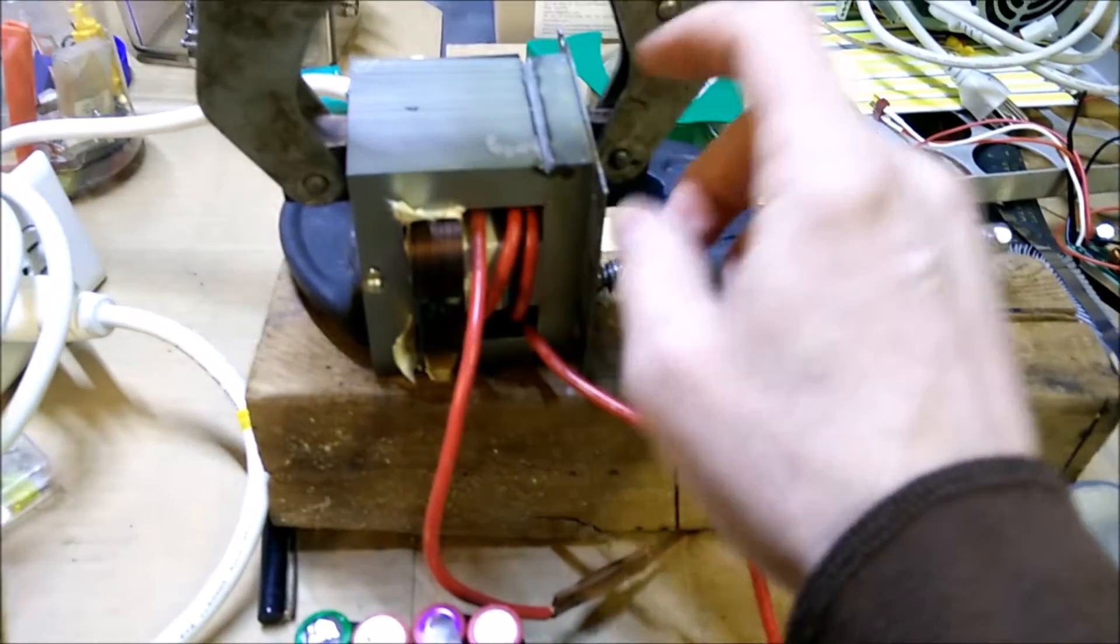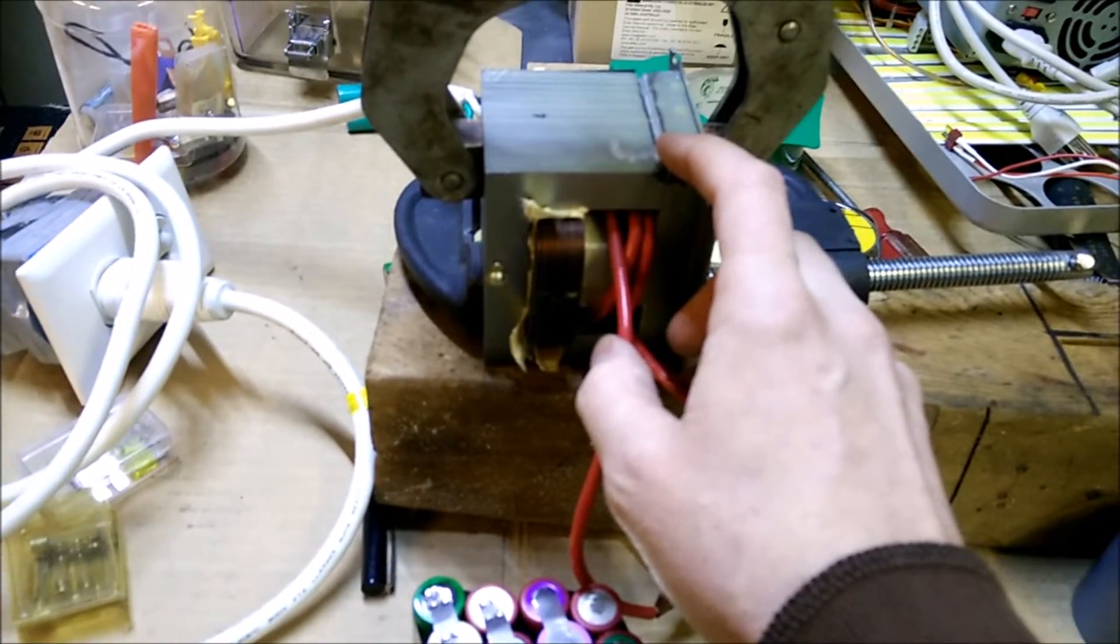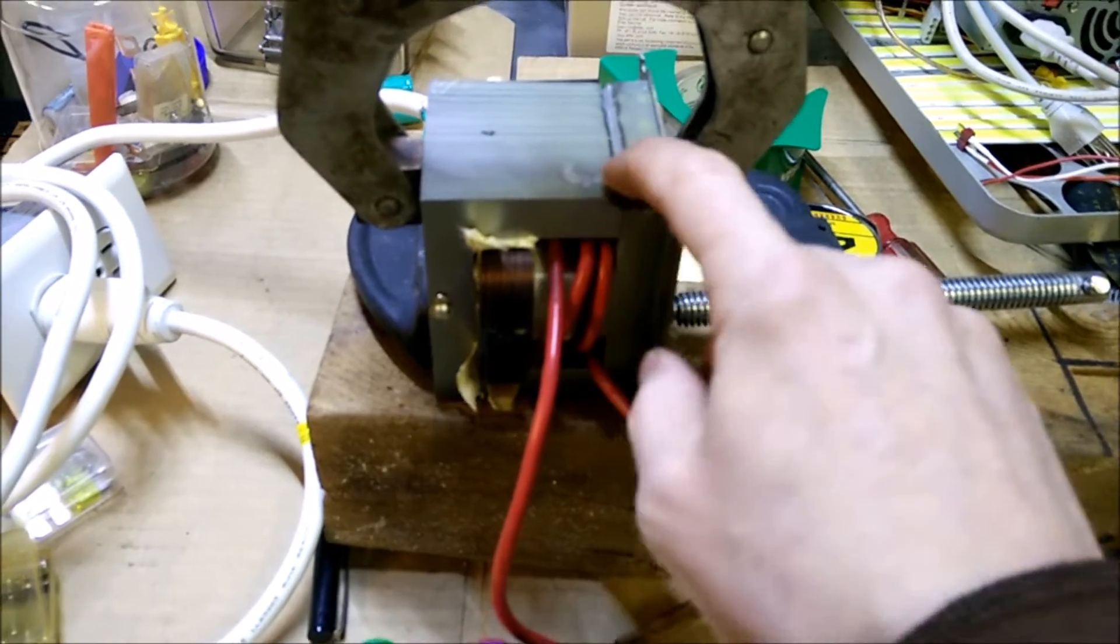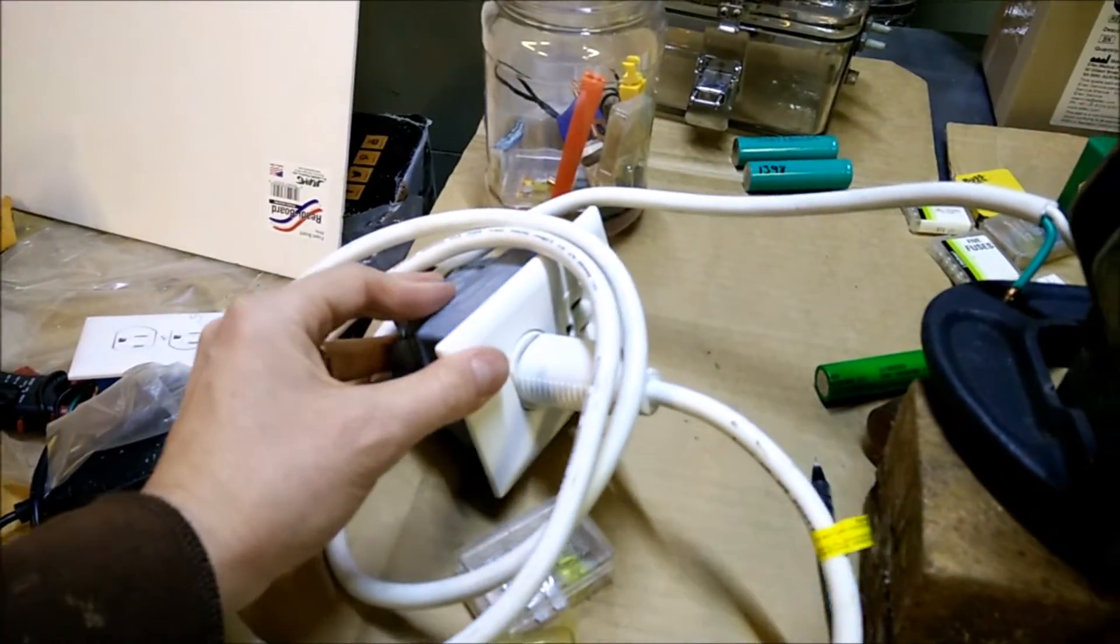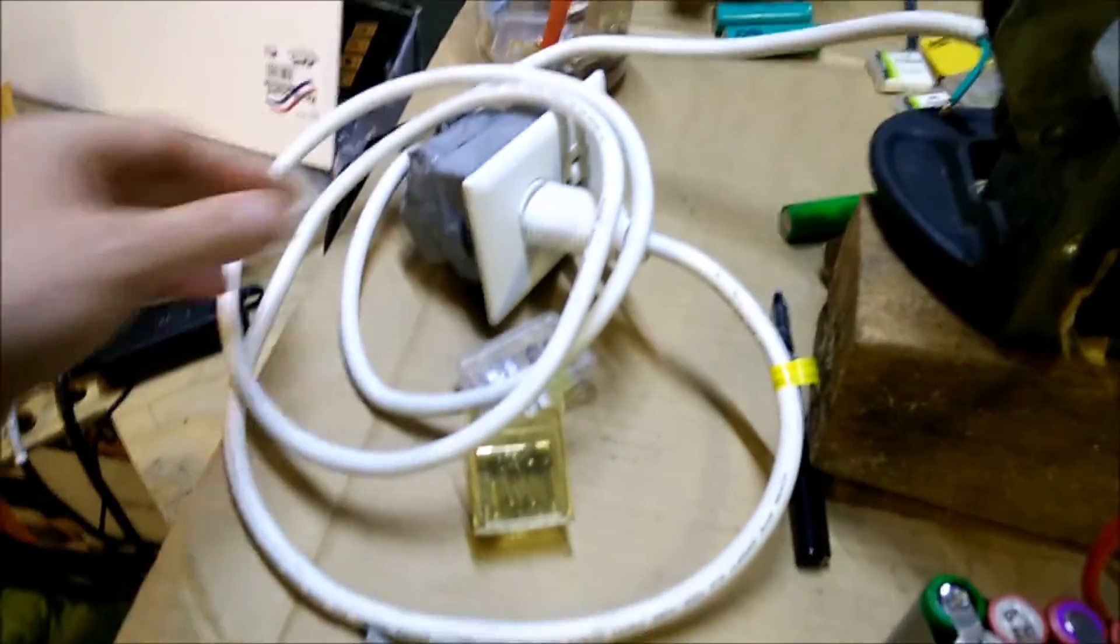So I've got my battery welder, just a microwave transformer. Lots of tutorials on how to do that. And then I have a solid state relay in here. It wouldn't have to be solid state, that's what I had.